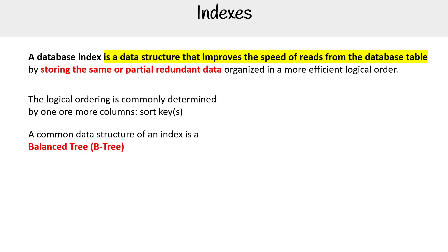A common data structure for an index is a balanced tree, shortened to B-tree — not to be confused with a binary tree, which is something else. So when you see B-tree, that's how it's doing that.